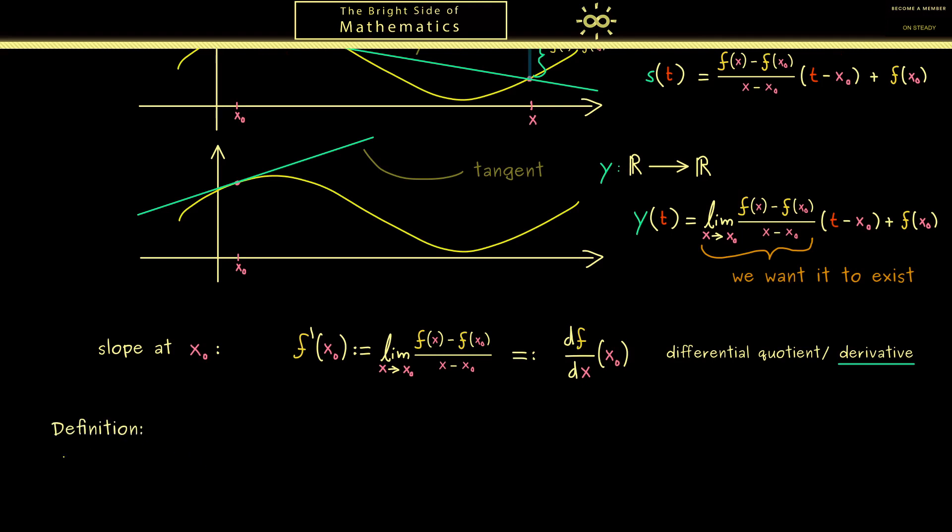Now this is the definition for a function having such a nice linear approximation. Now let's do it in more generality where the function f has a domain I. Here please keep in mind this whole limit process has to make sense. In other words we need enough points around x0.